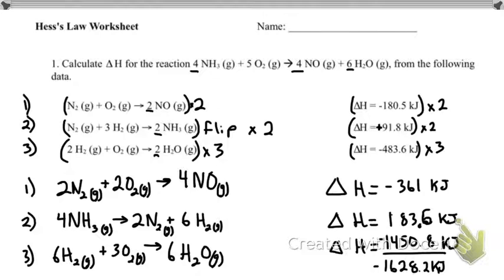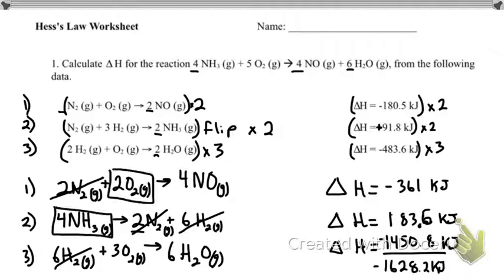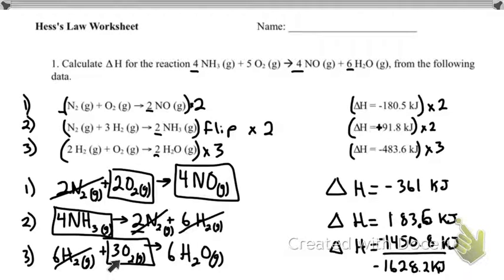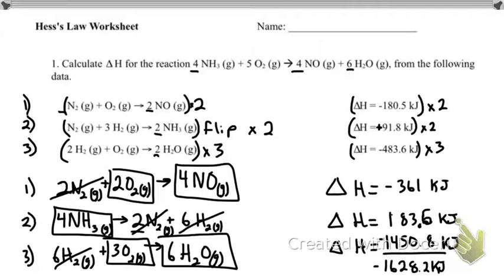Next problem — actually, we'll cancel out just to make sure. Here I have four ammonias — one, two, three, four — and five oxygens. Then I have four NOs and six H2Os. So we're good.